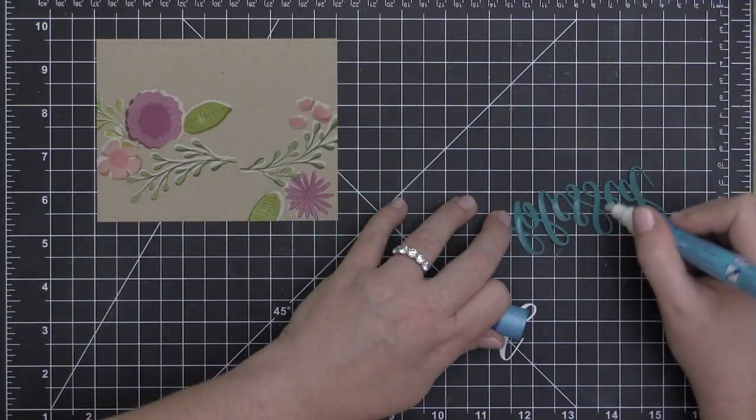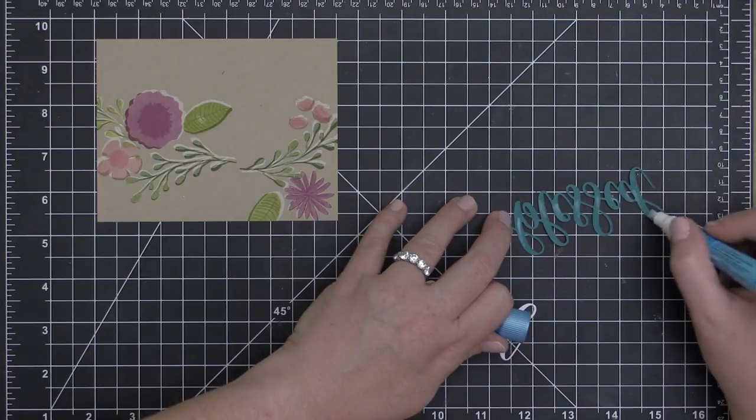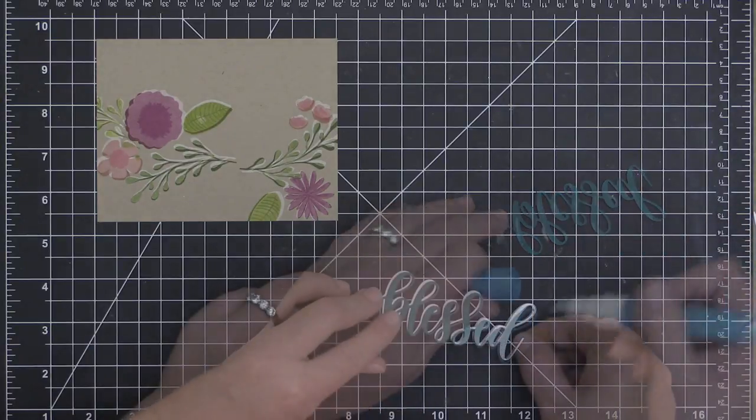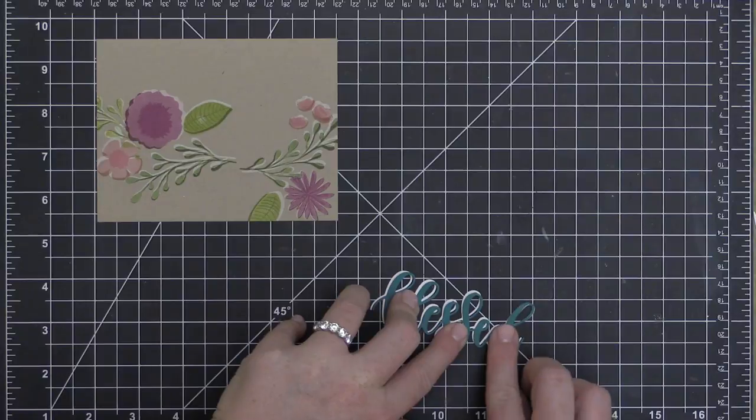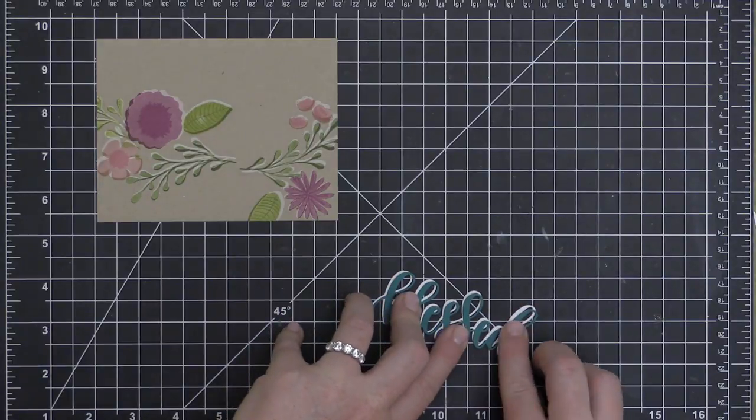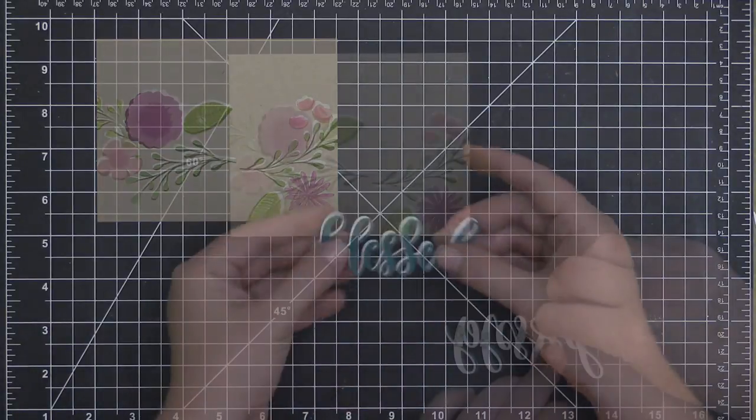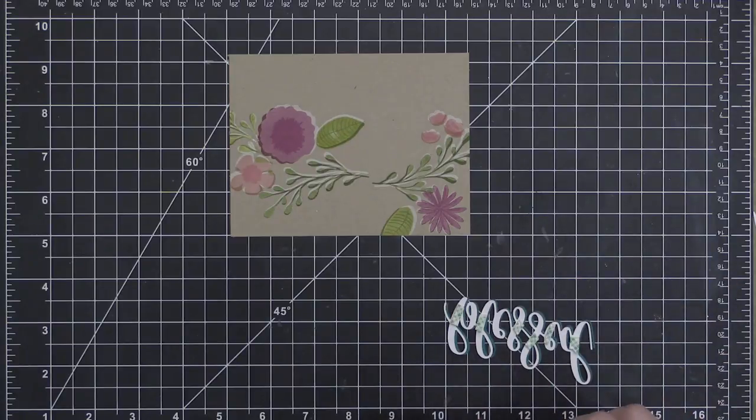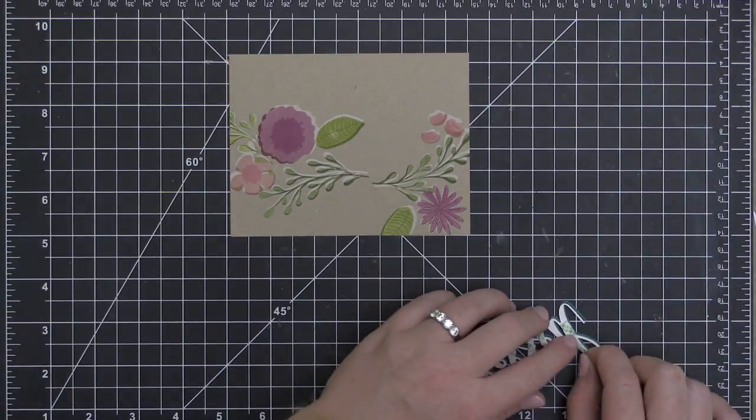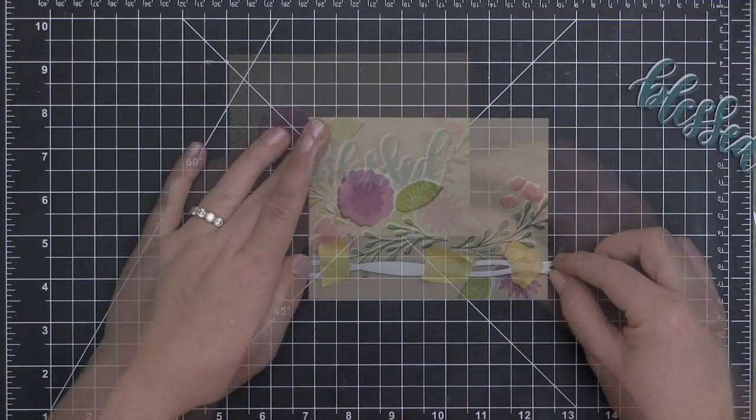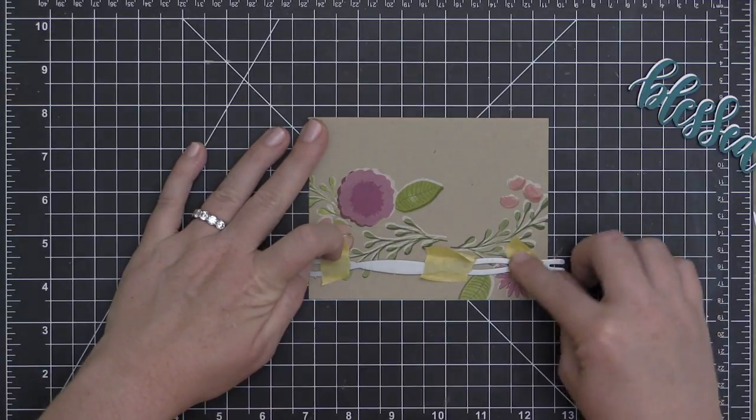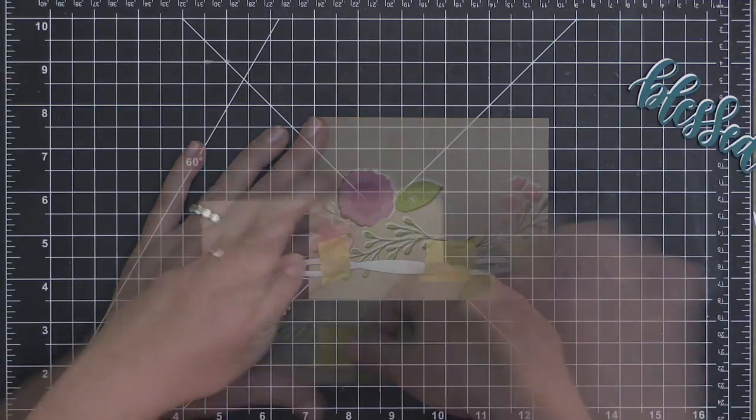I've done the stamping onto this craft cardstock in the same way that I did on the first card, so I didn't show that. I used the white pigment ink first and then the dye inks over the top. I cut a shadow for this Blessed die-cut out of some white cardstock—it's actually the same size as the original die-cut, but I offset it just slightly to create a white shadow like all of my stamping has.